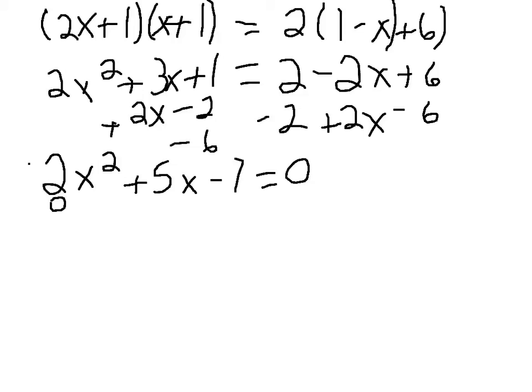And then the next thing you're going to do is factor 2x squared plus 5x minus 7. So then you get 2x plus 7 times x minus 1 equals 0.